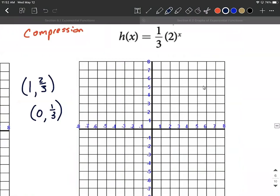Let's plot these key points: (0, 1/3) and (1, 2/3) on our graph. Put this all together and try to get a nice graph.